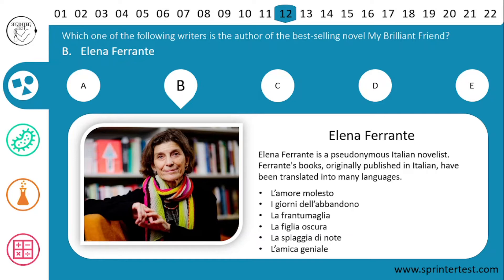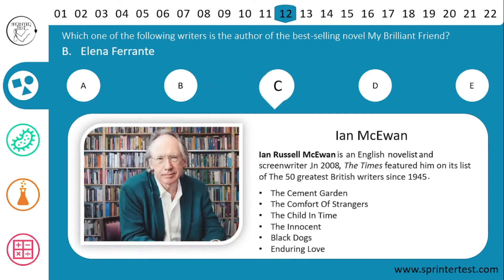Moving to answer C, Ian Russell McEwan is an English novelist and screenwriter. In 2008, The Times featured him on its list of the 50 greatest British writers since 1945. His books include The Cement Garden, The Comfort of Strangers, The Child in Time, The Innocent, Black Dogs, and Enduring Love.